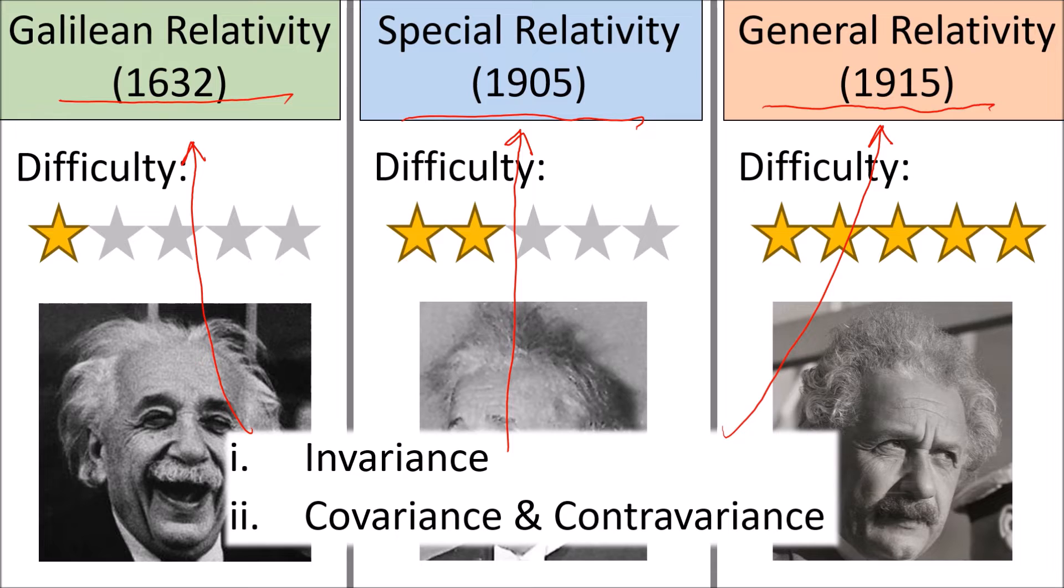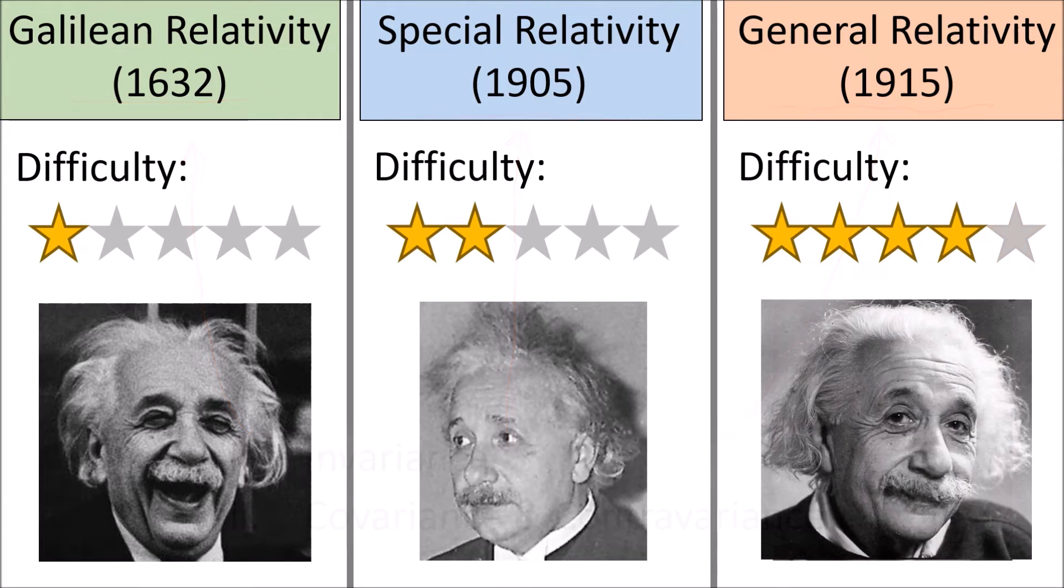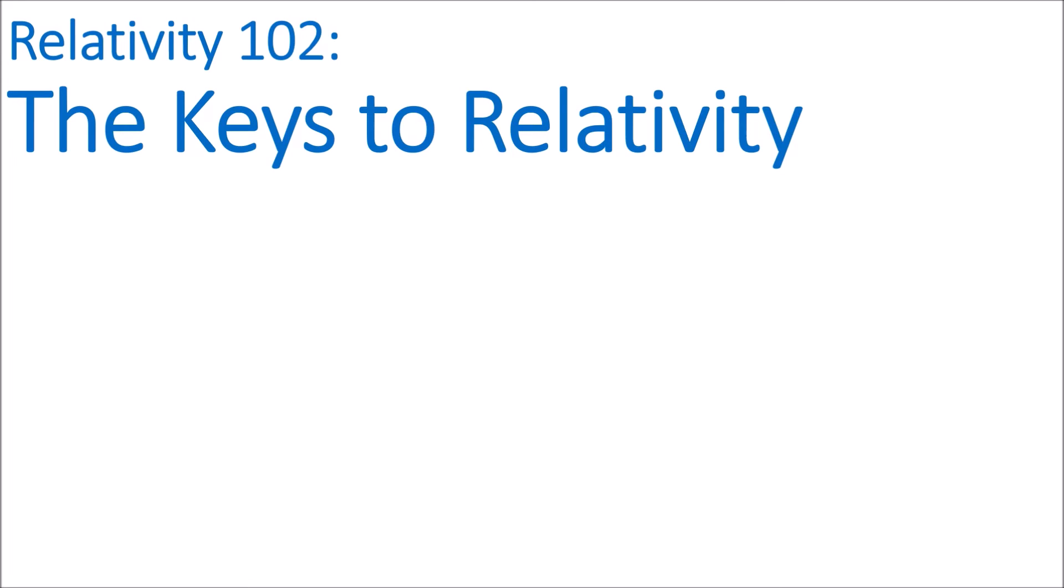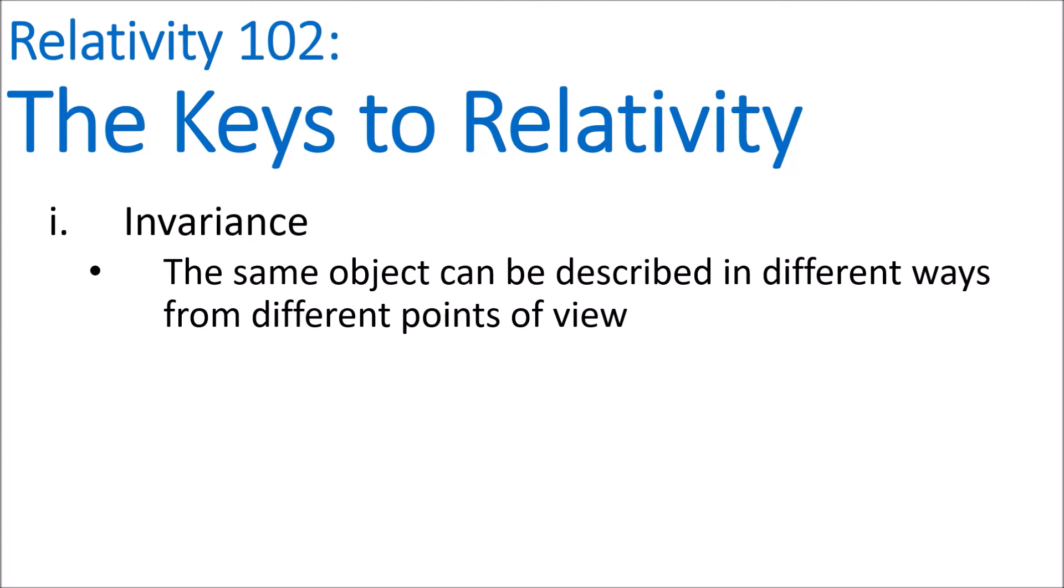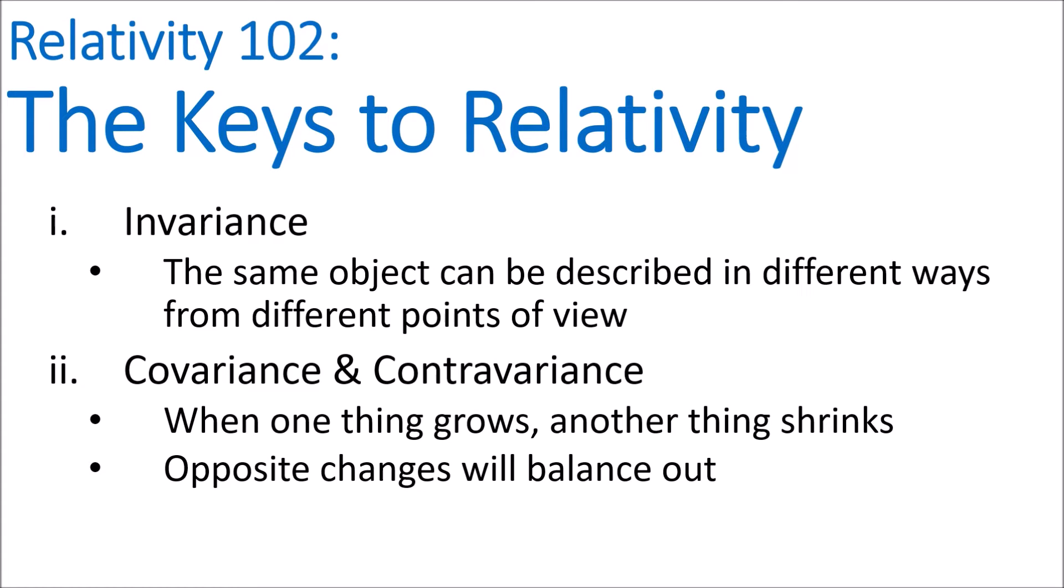So I'm hoping that by introducing invariance, covariance, and contravariance at the very beginning, before Galilean relativity, you'll be so used to these ideas that general relativity won't be as difficult. So what do these fancy words actually mean? Roughly, invariance is the idea that the same object can be described in different ways from different points of view. And covariance and contravariance roughly refer to the idea that when one thing grows, another thing shrinks, and opposite changes will balance out.